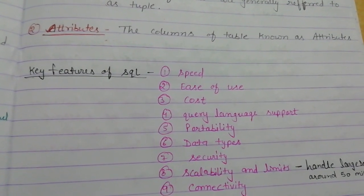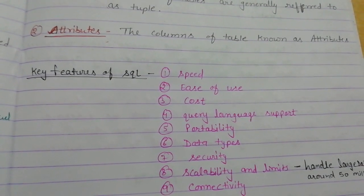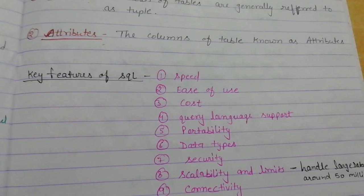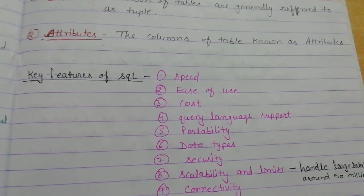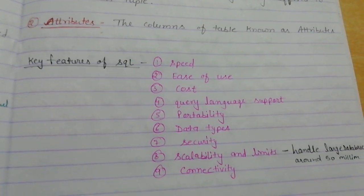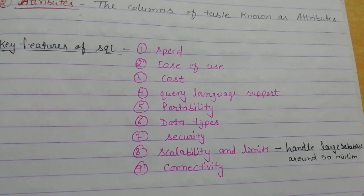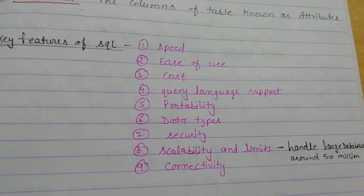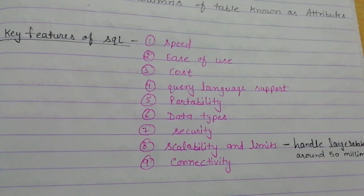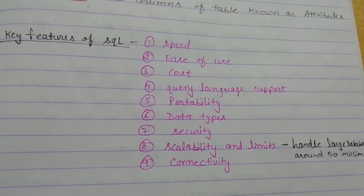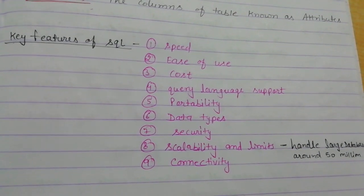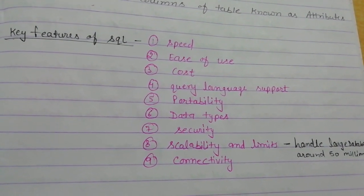Fifth, portability — in any system, we can easily access it from any server. That is called portability. Sixth, data types — whatever work is based on data types, it is based on all these things. When I tell you practically, I will explain what you have to do. Seventh, security — in any database, we can put a secure password. It is in a secure format; no hacker or cracker can crack it.